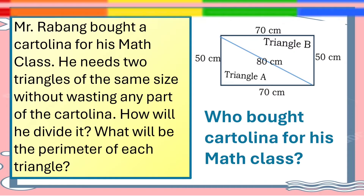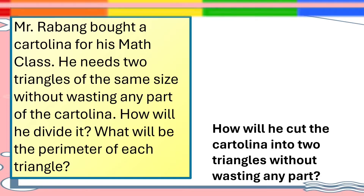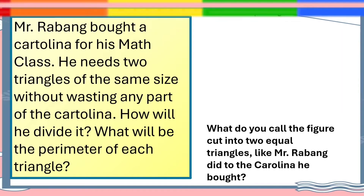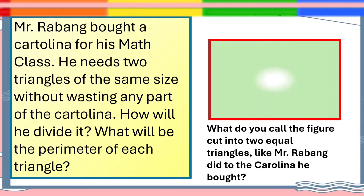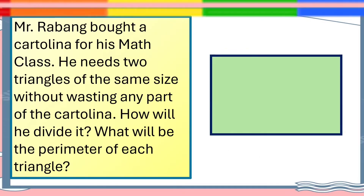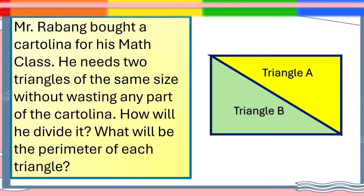Who bought cartulina for his Math class? That's correct — Mr. Rabang bought a cartulina. How will he cut the cartulina into two triangles without wasting any part? To help Mr. Rabang, we will use a diagonal line to make two triangles of the same size. The figure cut into two equal triangles is what we call a composite figure. Let's find out the measurements of the sides of the cartulina and the diagonal line.